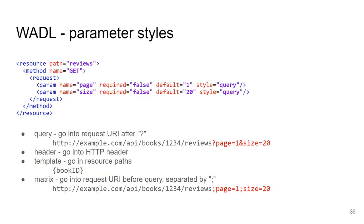To wrap up: if your web service does not comply with level three of the Richardson Maturity Model, you should call it an HTTP-based web service, not a RESTful web service. All you can really say about it is that it's accessible via HTTP. Most web services that claim to be RESTful are actually just HTTP-based. In the tutorial, we'll try to build an HTTP-based web service and describe it using OpenAPI. Are there any questions?